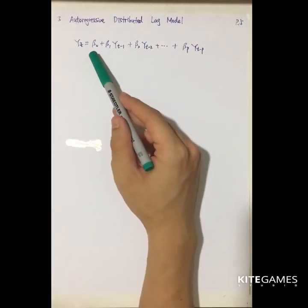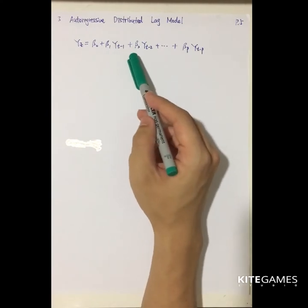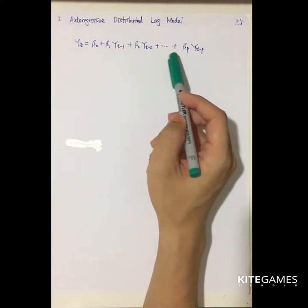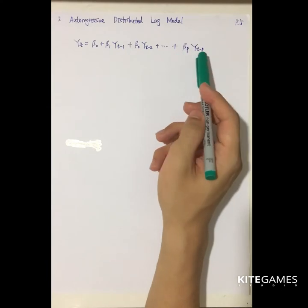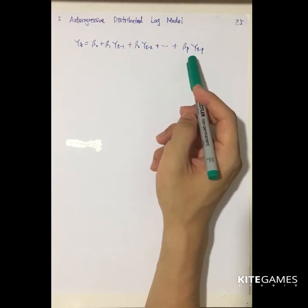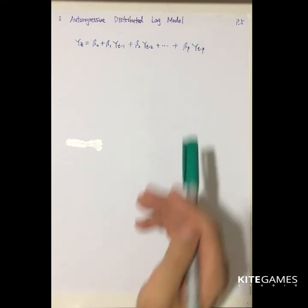yt equal to beta 0 plus beta 1 the lag 1 plus beta 2 the lag 2 plus up to beta p the lag p period of y.